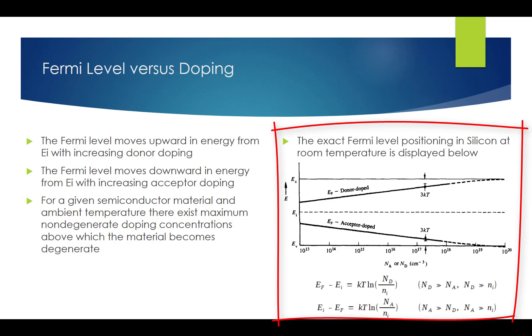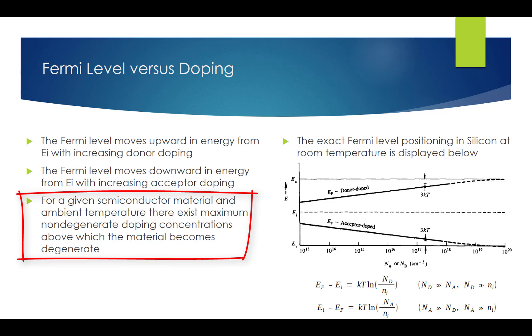This figure shows exact Fermi level EF positioning versus donor and acceptor doping in silicon at room temperature. For a given semiconductor material and ambient temperature, there exist maximum non-degenerate doping concentrations, above which the material becomes degenerate.